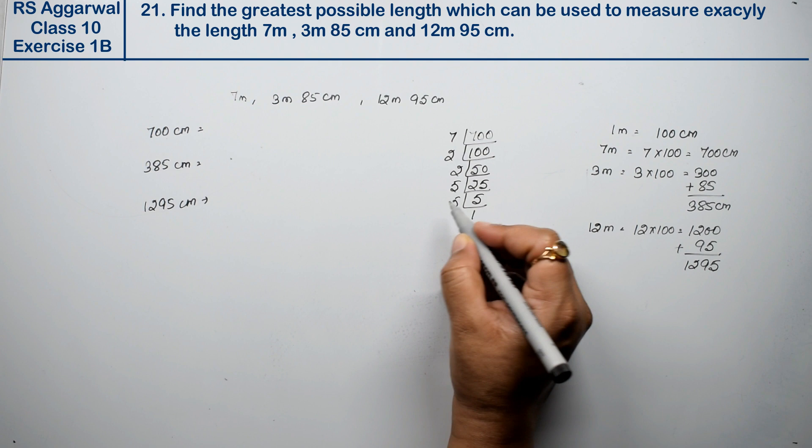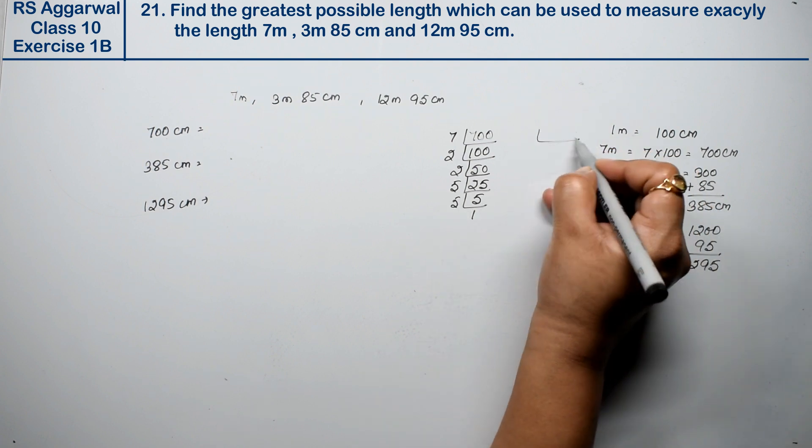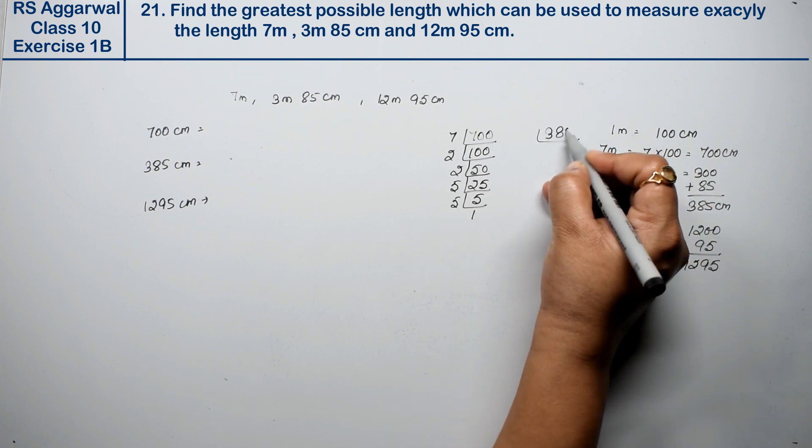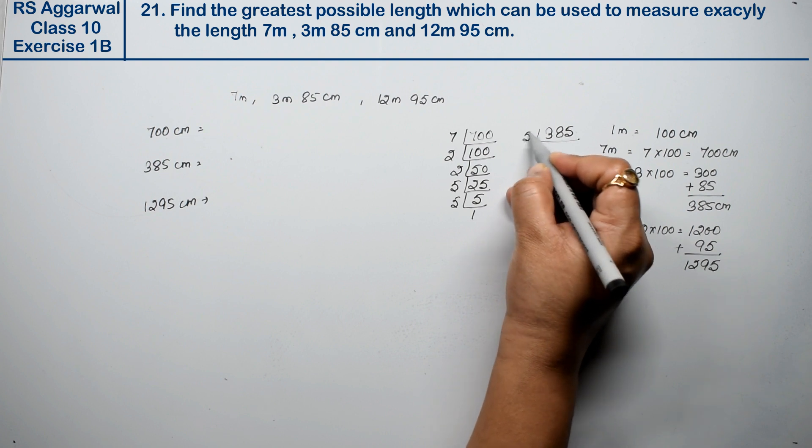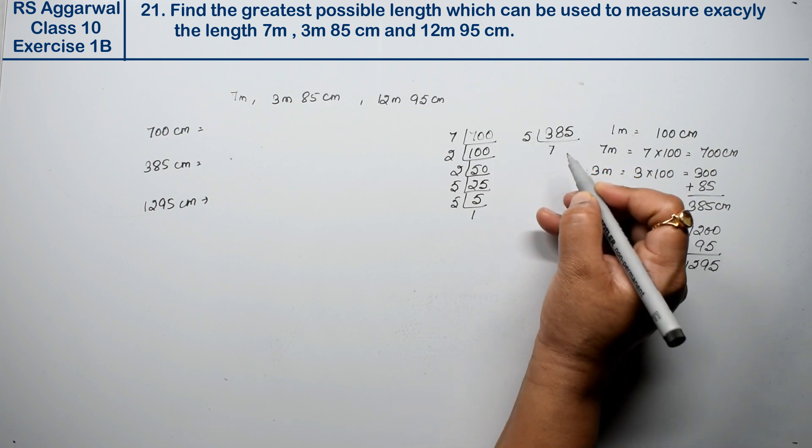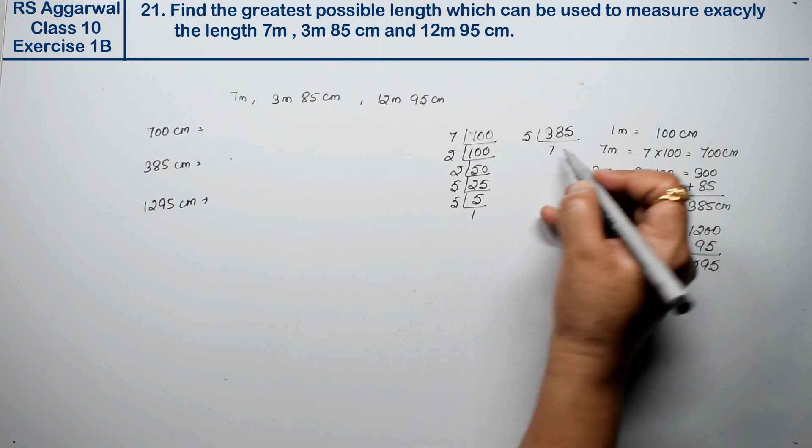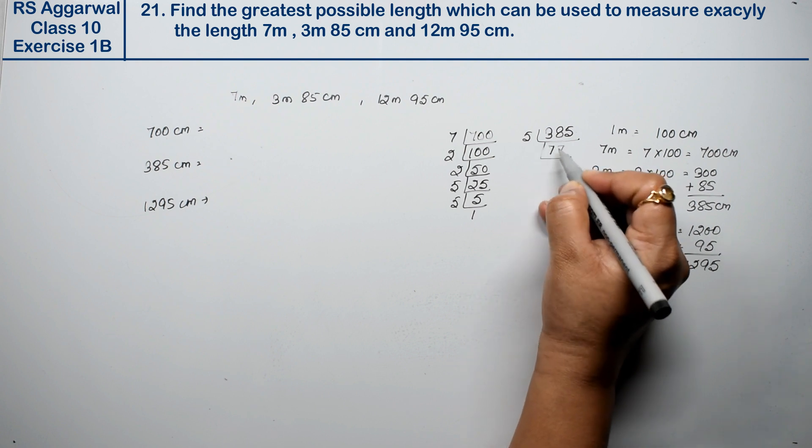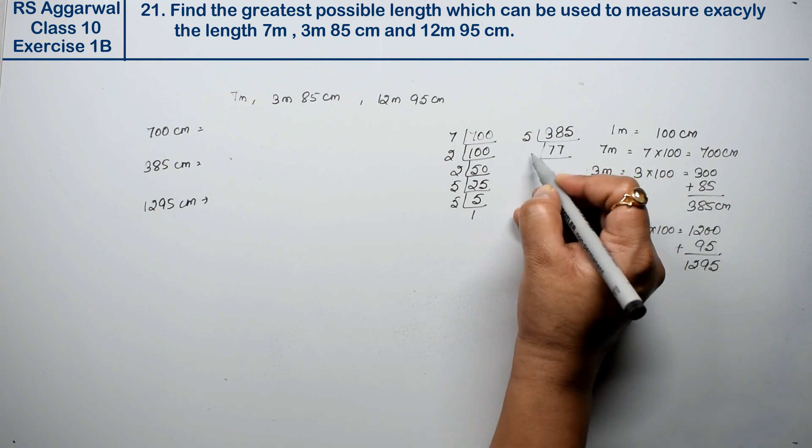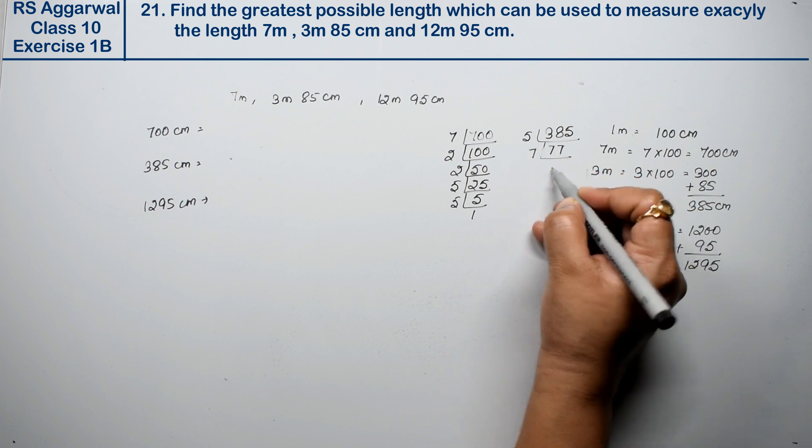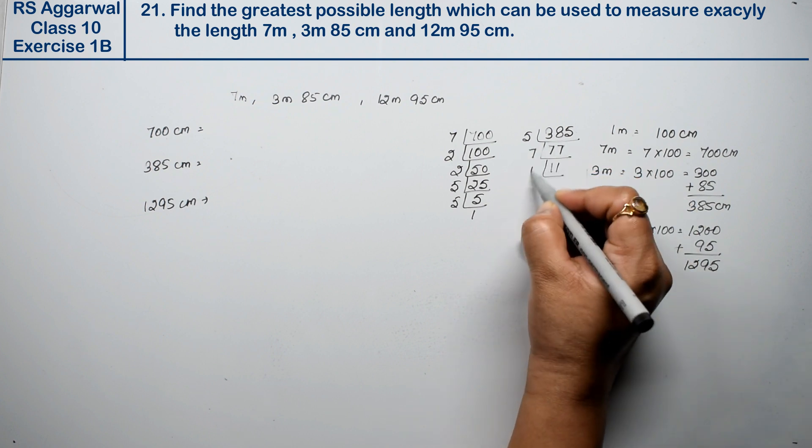Next, let's take 385. 385 divided by 5 gives 77. 77 divided by 7 gives 11, and 11 is 1. So 385 equals 5 times 7 times 11.